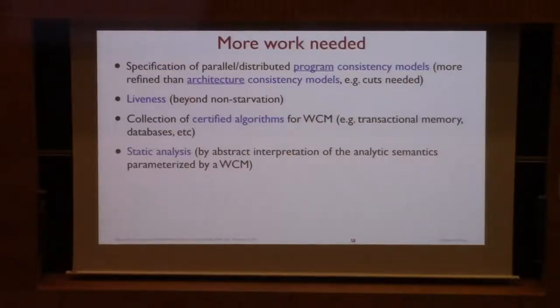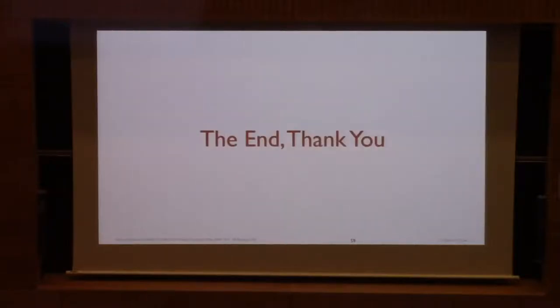So we have more work to do, or maybe we'll never do it. We have to extend the language from architecture consistency model for machines to something for programs which is less abstract. And we would like to consider liveness beyond non-starvation, because starvation is a bit special. Then we would like to have a collection of certified algorithms, for example on transactional memory database algorithms, because it also works for distributed programs and some static analysis. At the end, thank you. I am on time.